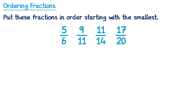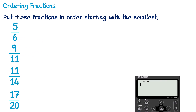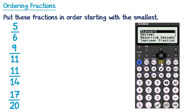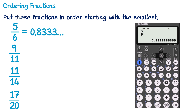Now what if the fractions have denominators like 6, 11, 14, and 20? It might take quite some time, because the lowest common multiple is 4,620. A question like this would almost certainly be on the calculator paper, so there's a slightly different approach we can use. We're going to take a calculator and turn each of these into decimals. For 5 sixths, we press 5, then the fraction button, then 6, then equals. If we press format and go down to decimal, then press OK, it gives us 0.8333 and so on.